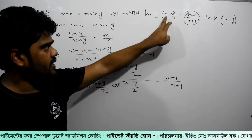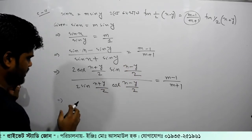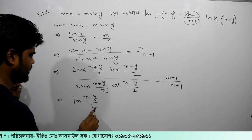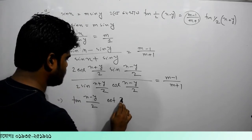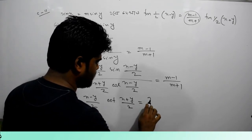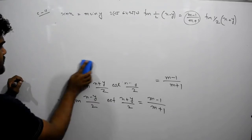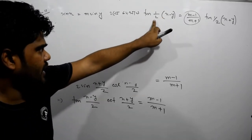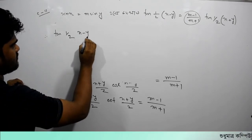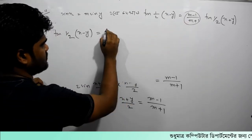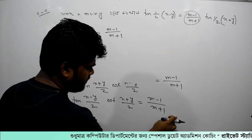So sin((x-y)/2) and cos((x-y)/2) cancel, and we get tan((x-y)/2). Two halves give us 2, so I am finding the same thing here. Tan of half of x minus y is equal to m minus 1 divided by m plus 1. And then tan — let me see this — this is cot right here, so 1 by cot means tan.